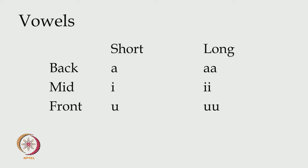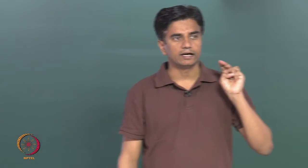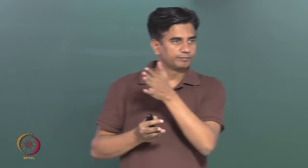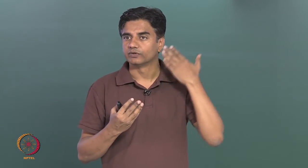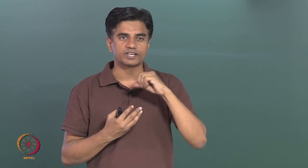Did we see vowel sounds last time? What is very crucial to refresh is that there are only three places of articulations for vowels — we have divided the entire oral cavity into three parts: back, mid, and front. The reason it has been divided into only three parts is because the obstruction of sound is very minimal. For back vowels, whatever little obstruction there is occurs in the back of the oral cavity; for mid vowels in the middle; and for front vowels, there is some obstruction at the front.